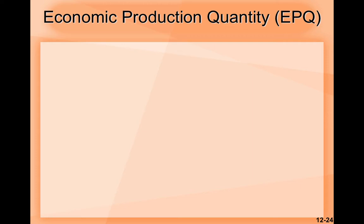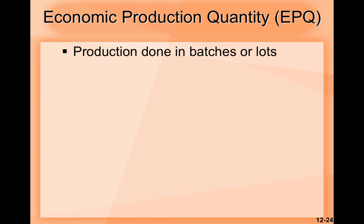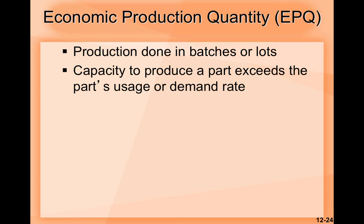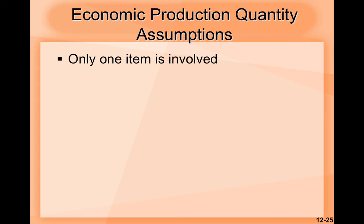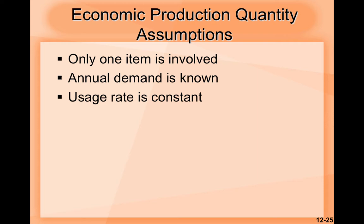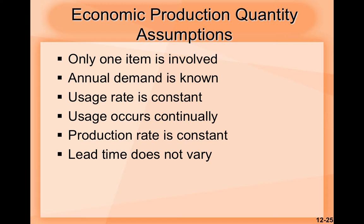The economic production quantity, or EPQ, involves production done in batches or lots. The capacity to produce a part exceeds the part's usage or demand rate. The assumptions of EPQ are similar to EOQ except orders are received incrementally during production. The specific assumptions are: only one item is involved, annual demand is known, usage rate is constant, usage occurs continually, production rate is constant, lead time does not vary, and no quantity discounts.